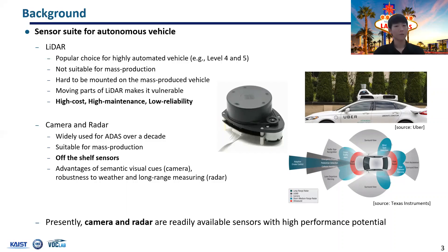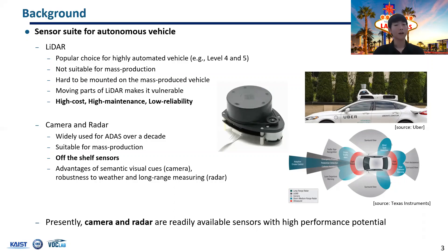Meanwhile, camera and radar have been widely used in ADAS for over a decade. Their fundamental mechanism is very suitable for mass production and there are many off-the-shelf products in the market. Therefore, it can be said that camera and radar are readily available sensors and they provide high performance potentials.